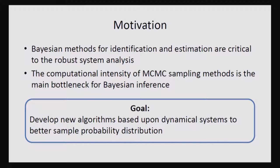So just as motivation, Bayesian methods are used for lots of identification estimation problems and they're very critical because they allow us to really quantify how robust our estimates are.